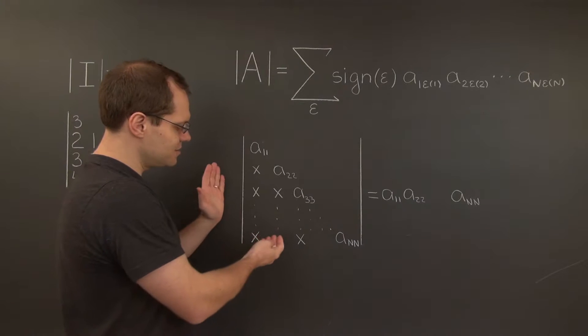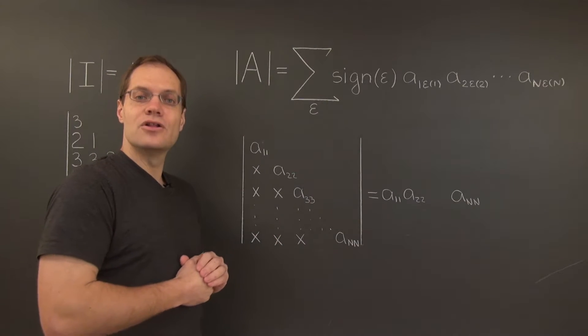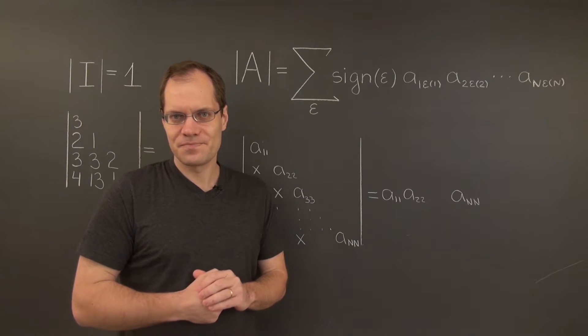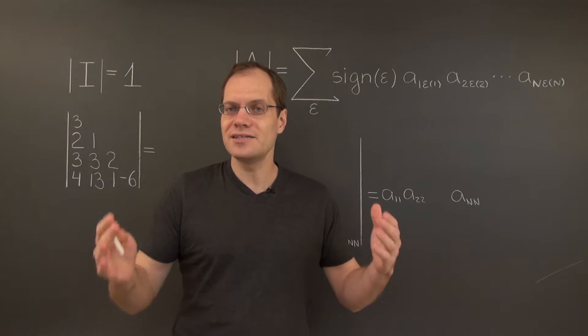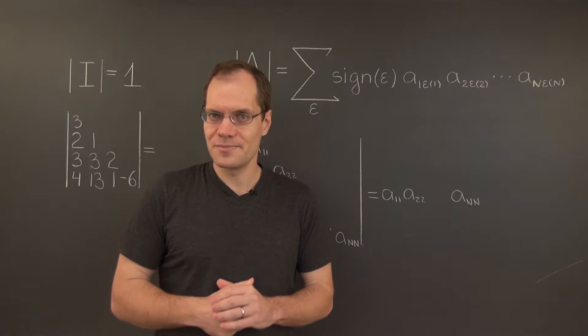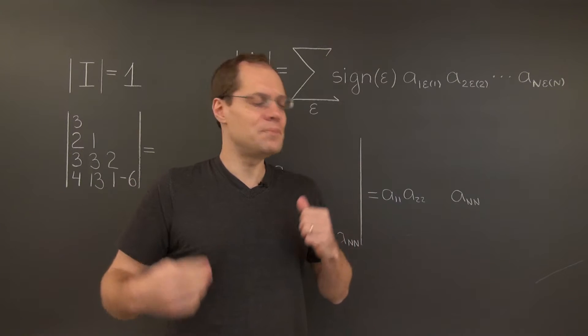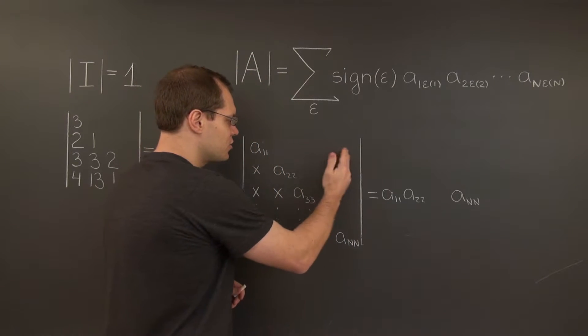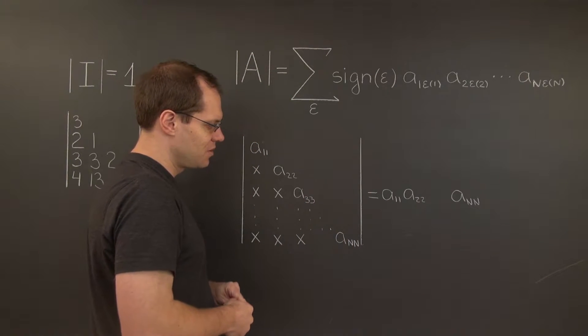So let's imagine that this is a general n by n lower triangular matrix, and let's identify all the non-zero terms from the determinant, because a lot of them will be zero, simply because there are so many zero entries.